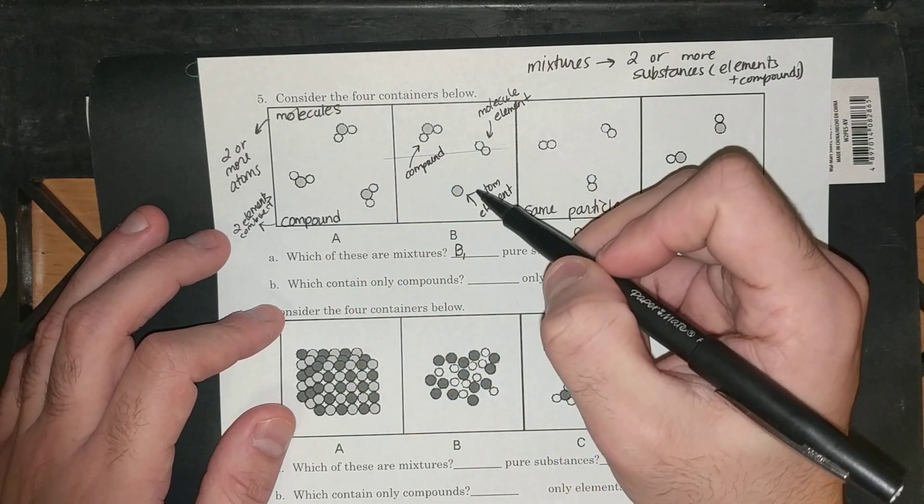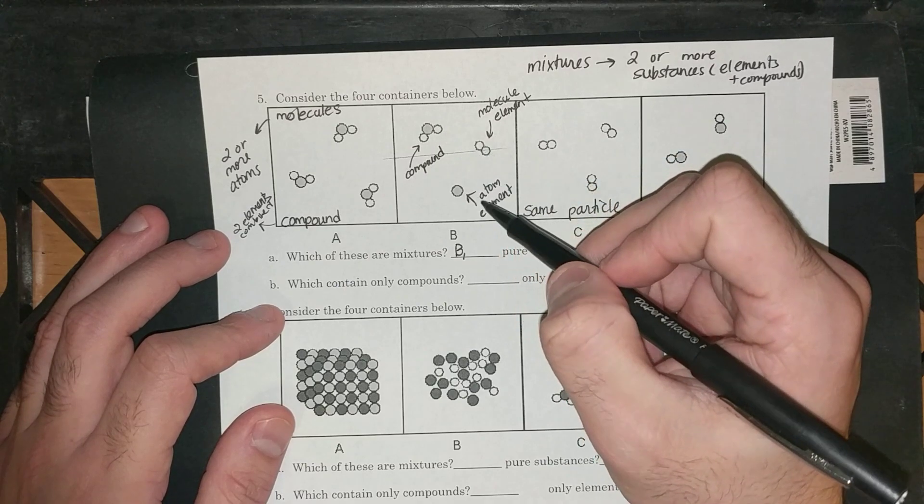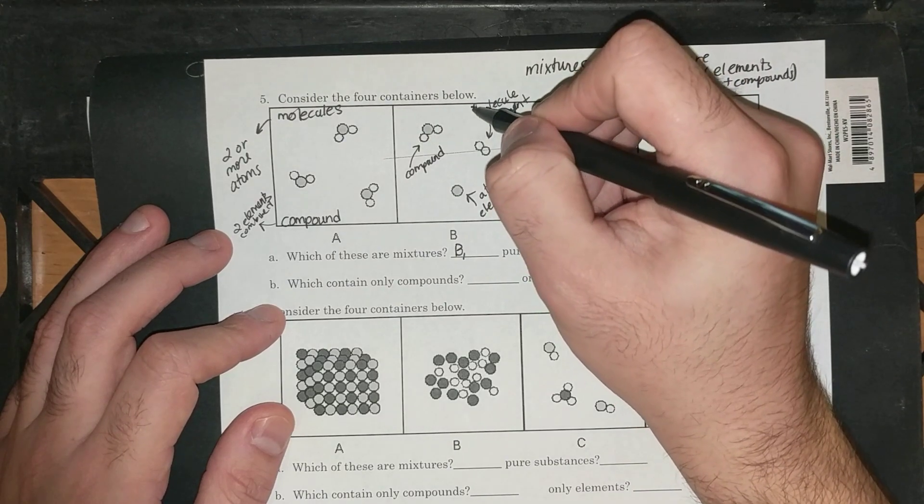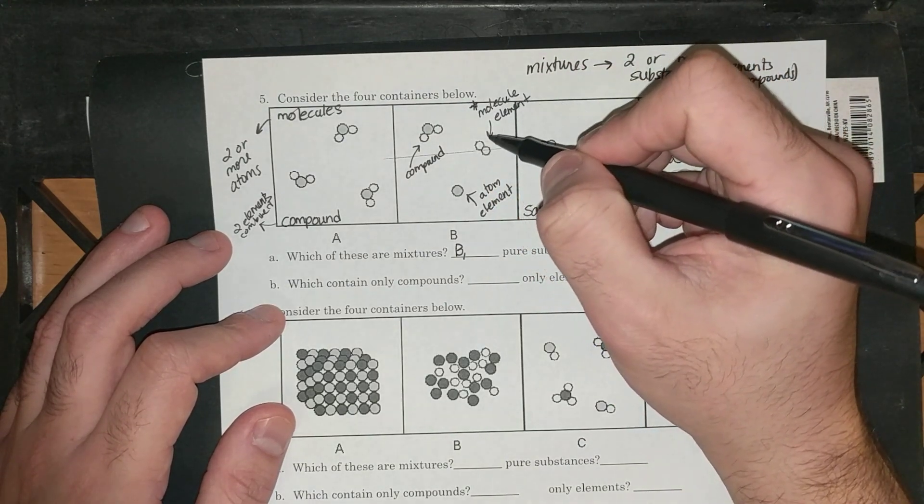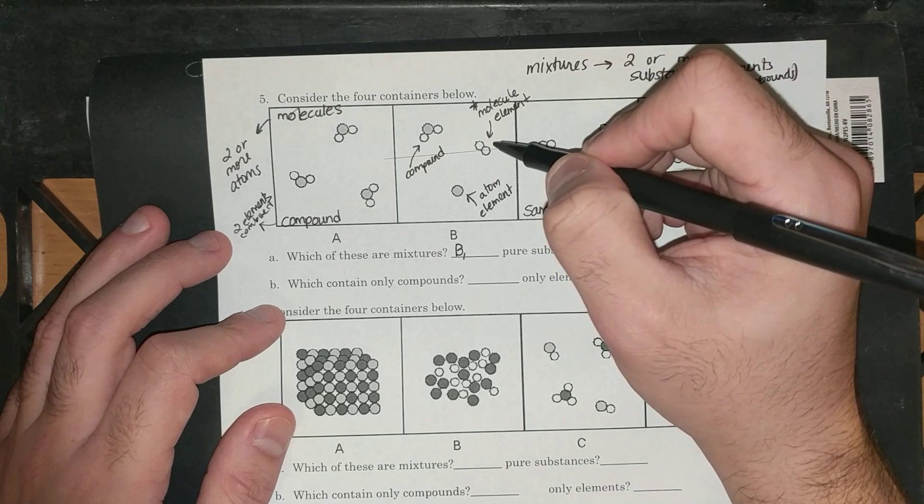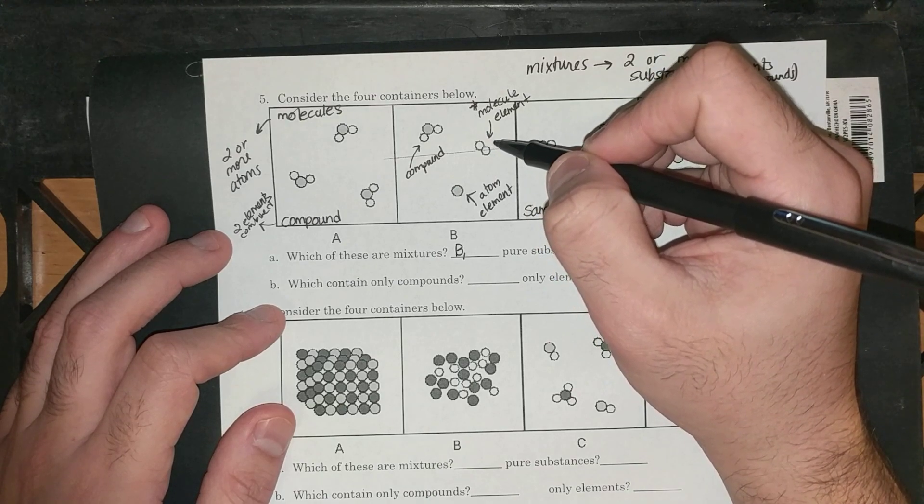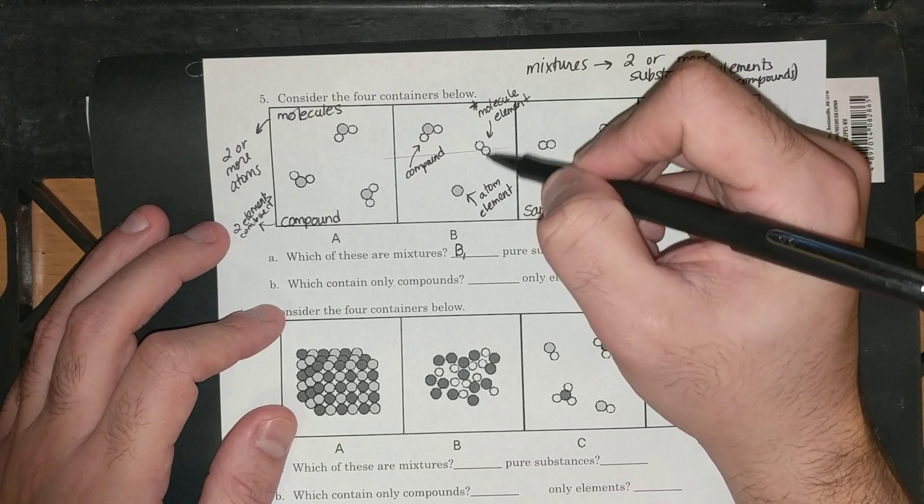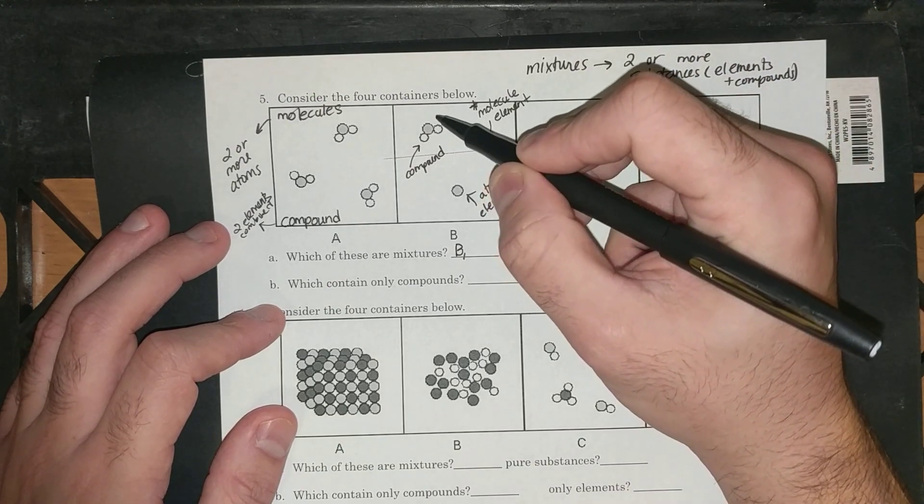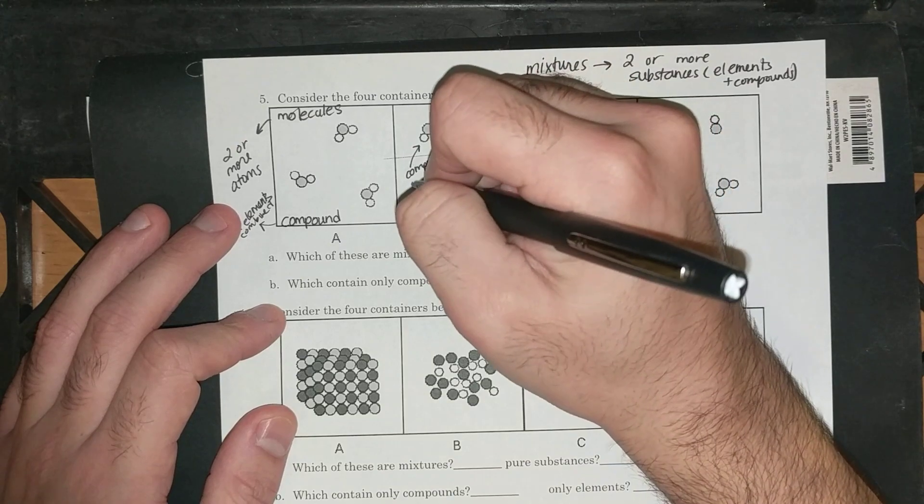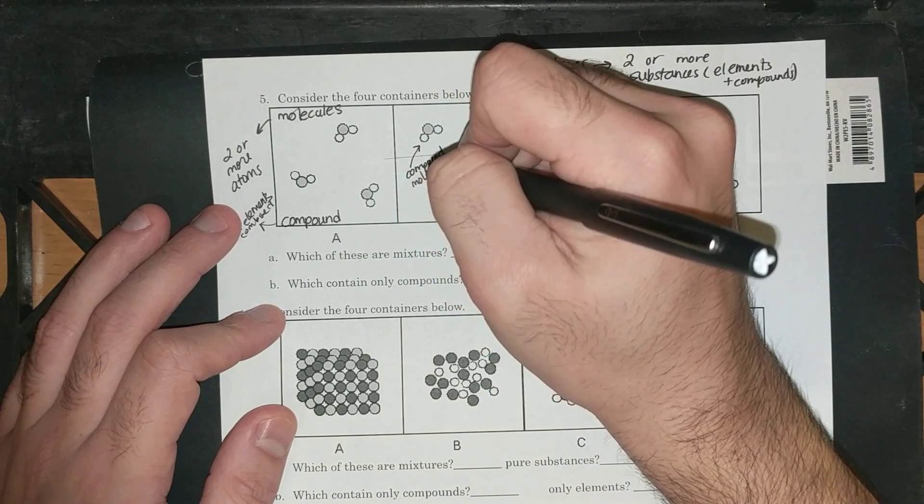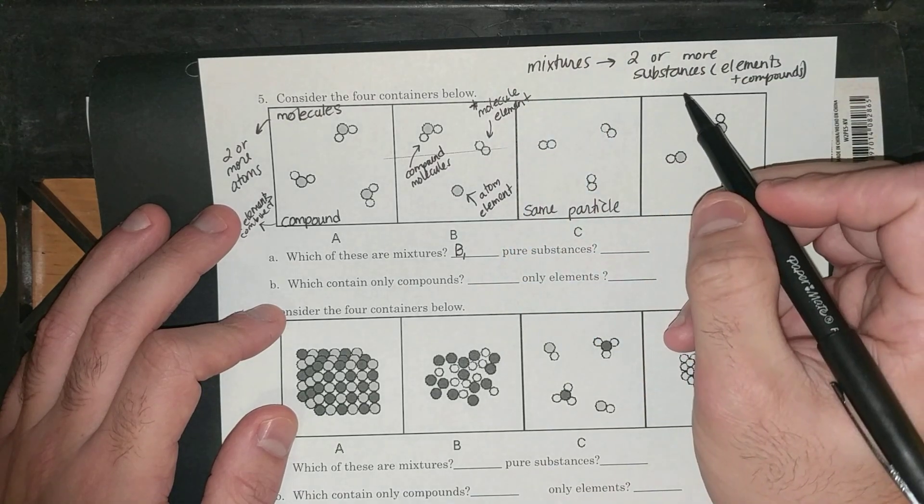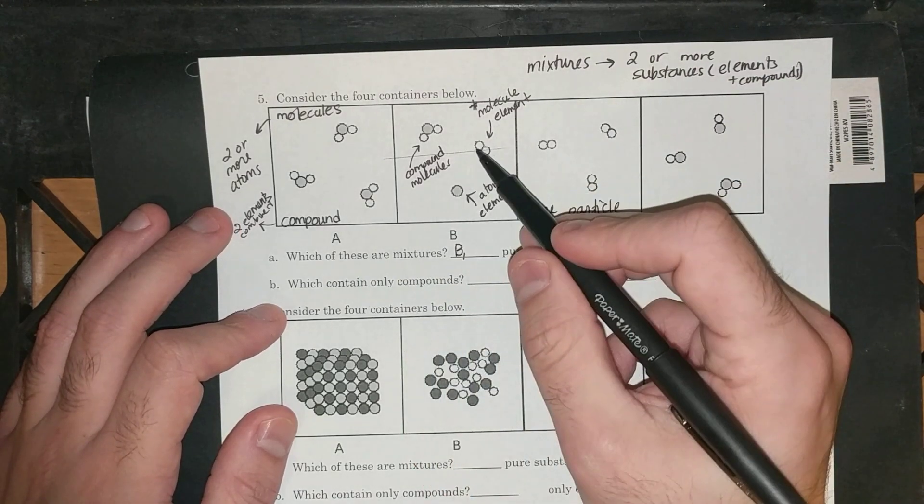In the next box, I have three different things here. I have an atom of an element. I have what I'm going to call a molecule of an element. This is going to be huge. Make sure you know that if it's the same color, it's an element. But if I have more than one, it's still a molecule. So I have a molecule of an element, an atom of an element, and then I have a molecule of a compound. I have three different things here, three different substances here. Two or more substances combined is a mixture. So B was definitely a mixture.